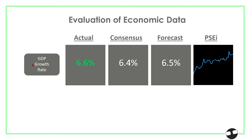Here's an example using GDP, which is an affirmative data point. If the forecast is 6.5 and the consensus is 6.4, but the actual figure comes in at 6.6 — higher than both — since this is affirmative data we want to see higher figures. This would impact the PSEi with a positive sentiment, and we would see the index trend upward.